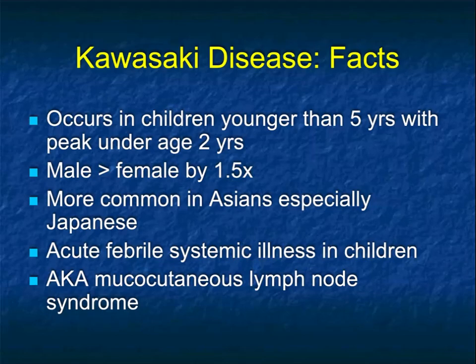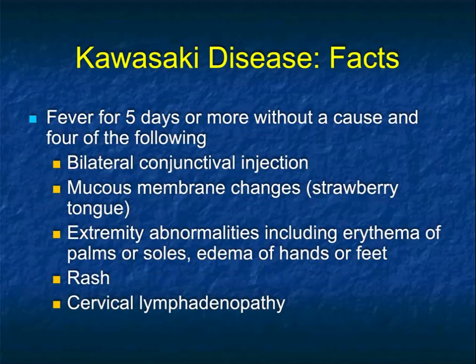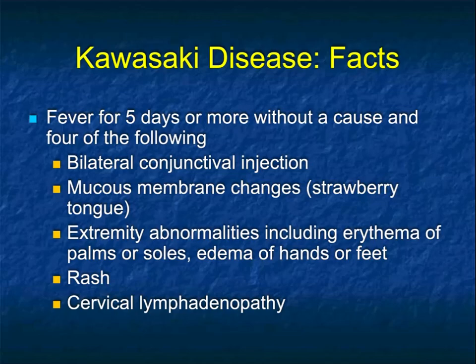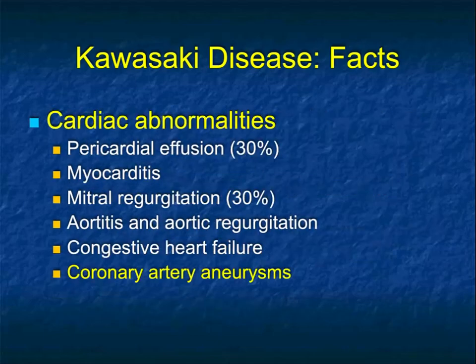Kawasaki's is more common in males than females, more common in Asians — especially Japanese — and is also known as mucocutaneous lymph node syndrome. In terms of presentation: fever for five or more days without a cause, and four of the following five features — bilateral conjunctival injection, mucous membrane changes (the so-called strawberry tongue), extremity abnormalities including erythema of the palms and soles, edema of the hands or feet, a rash, and cervical lymphadenopathy.